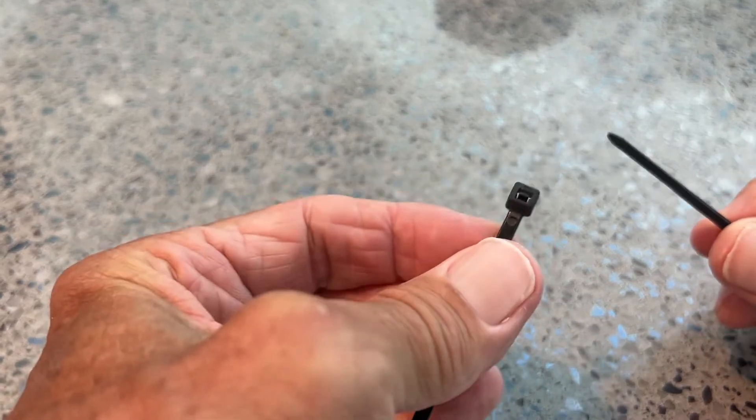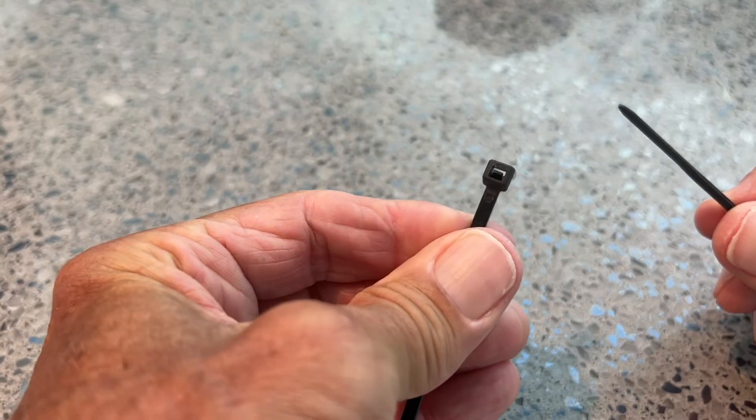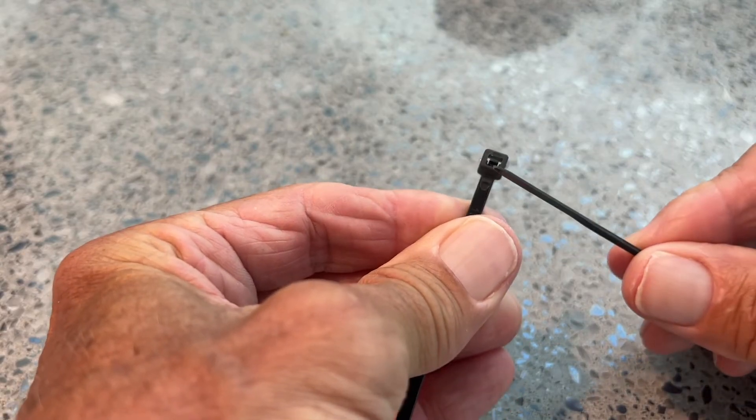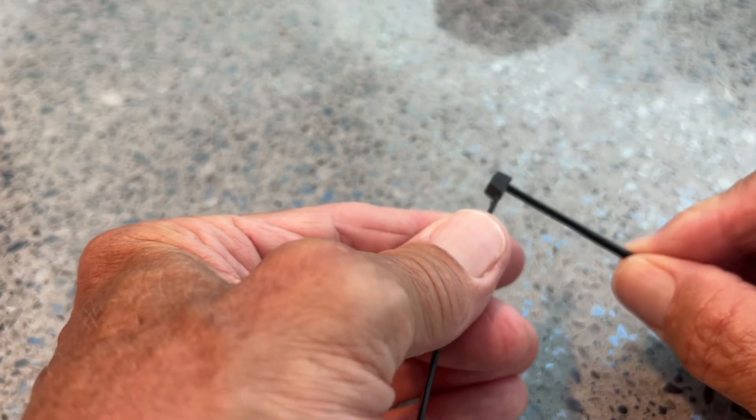And then what I need to do is if you look at the head of this, see how it sticks out to my left, and you see that little catch in the middle there, right there. What I've got to do is I've got to get the ridges on the bottom going in this way.